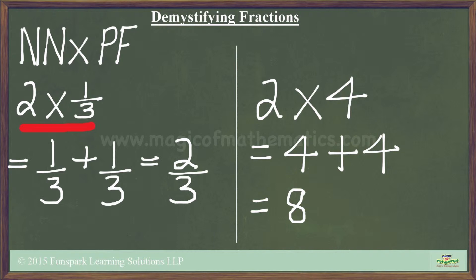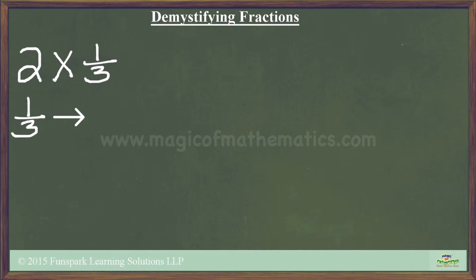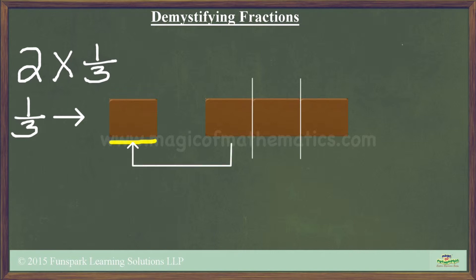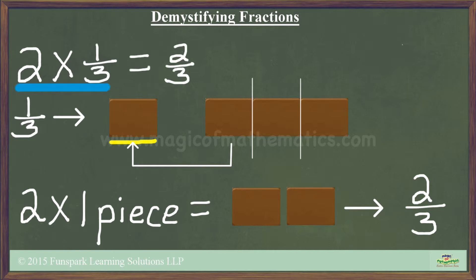We can also think about this problem in a visual way. We will look at the same example, namely 2 times 1/3. We know that 1/3 is one piece of something — say, a chocolate — this piece having been obtained by cutting the chocolate into three equal pieces. We know that 2 times 1 piece equals 2 pieces, and since the piece size has not changed, this is equivalent to 2/3. Thus, we have shown visually that 2 times 1/3 equals 2/3.